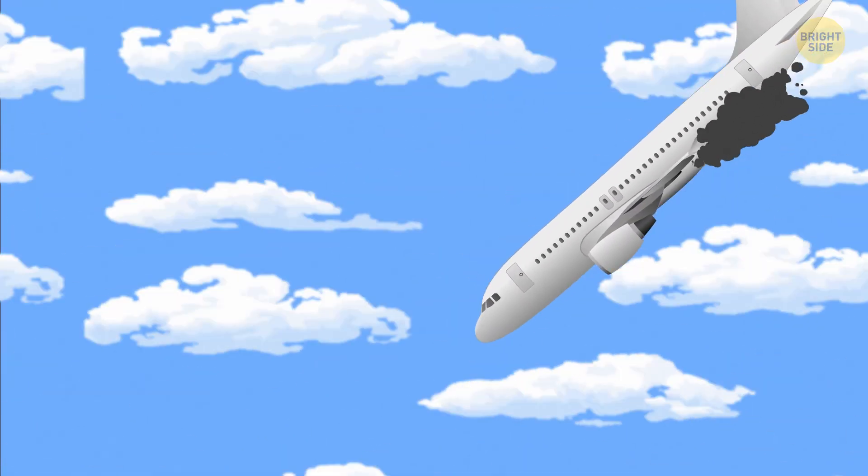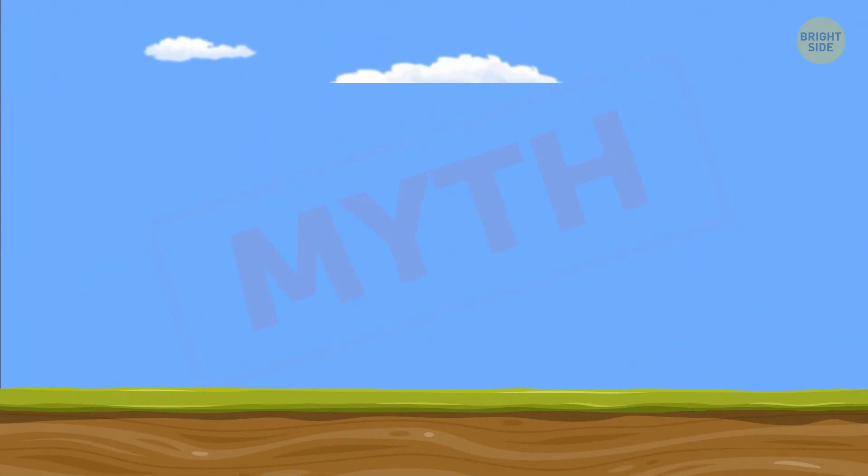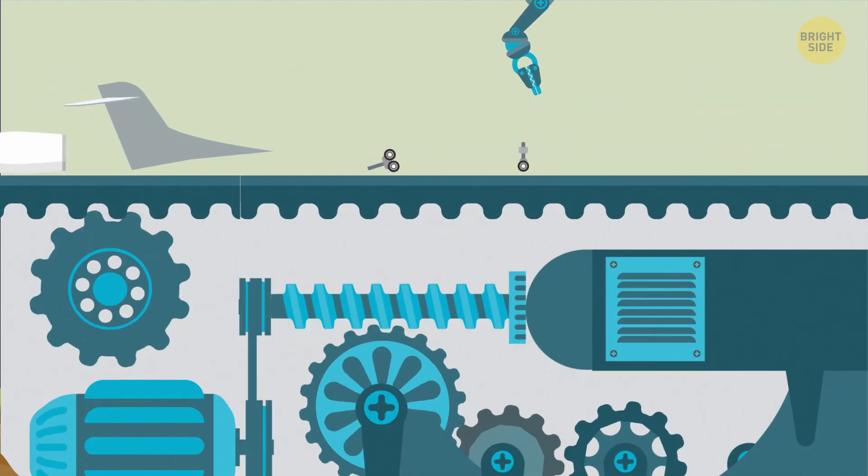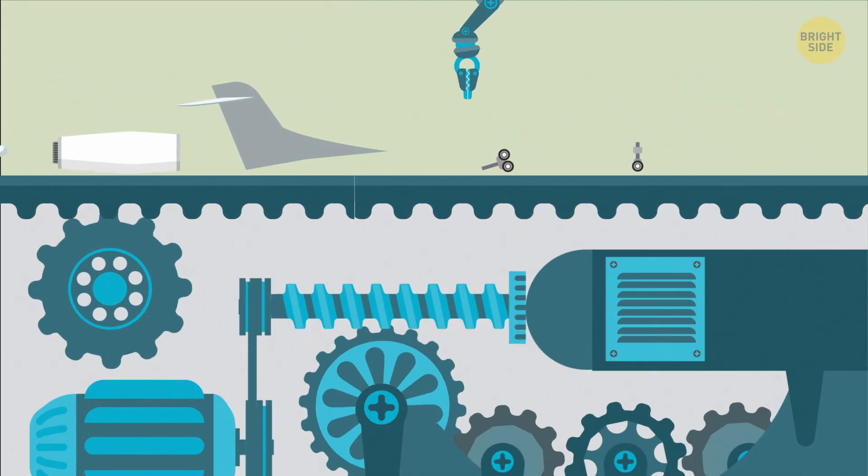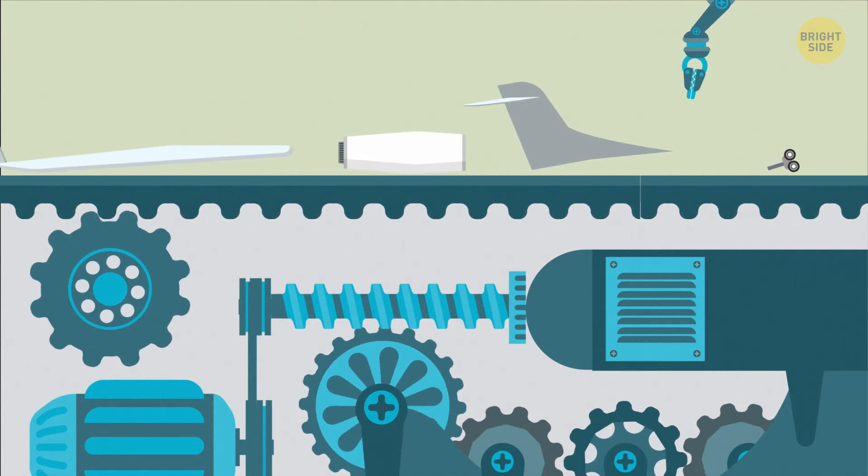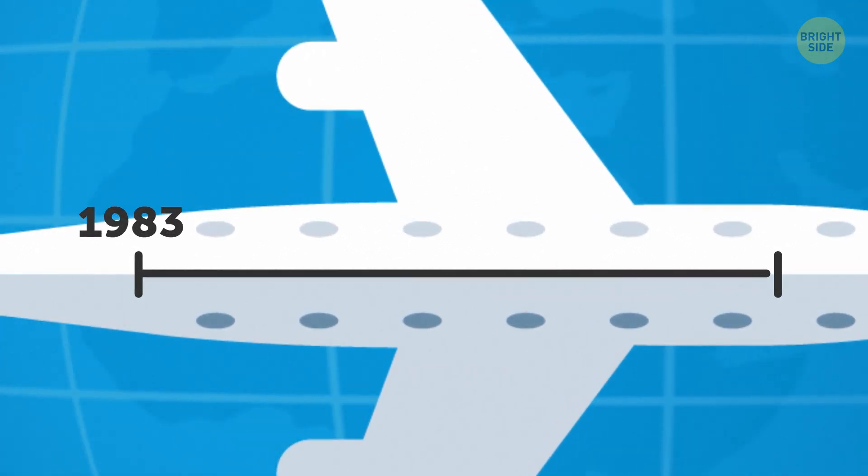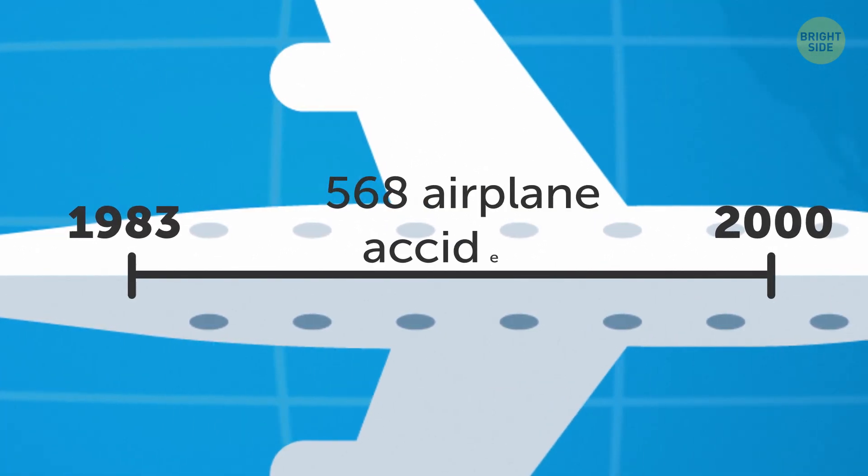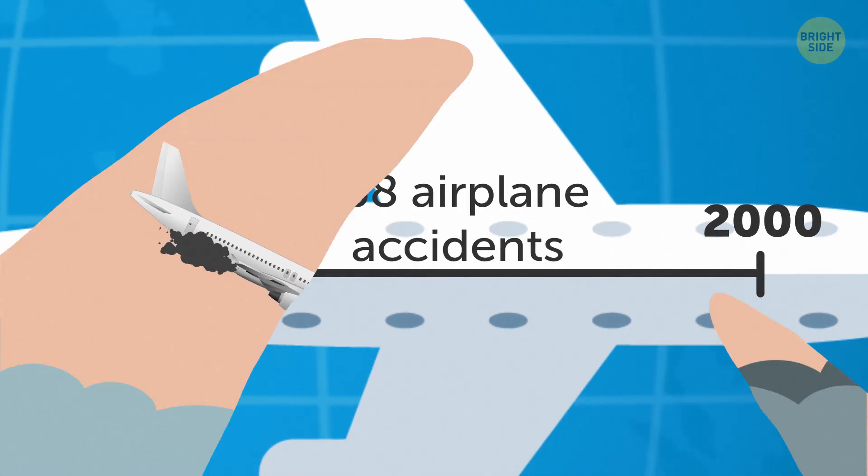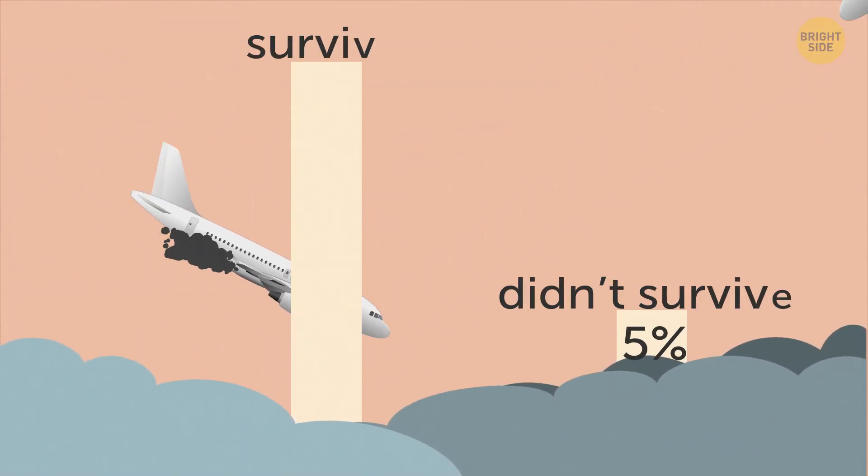There's a myth that there's no chance of surviving a plane crash, but it has little to do with reality. Airplanes are being constructed by people who are experts at aerodynamics and gravitational forces. Let's look at the statistics again. There have been 568 airplane accidents in the US between 1983 and 2000. The number of people who didn't survive was only 5% of all the passengers who were on board.